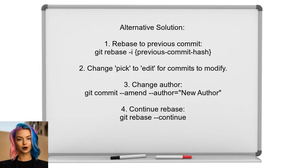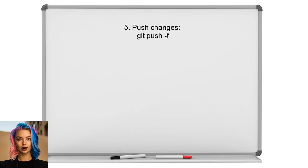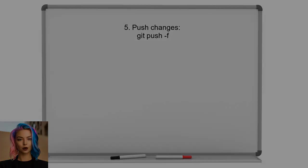Another alternative solution involves a few easy steps. First, rebase your repository to the previous commit using the command git rebase -i, followed by the commit hash. This will open a list of your commits. Next, replace pick with edit for each commit you want to change and save your changes. When the rebase starts, use git commit --amend --author to change the author name. Finally, continue the rebase process with git rebase --continue and push your changes with git push -f.